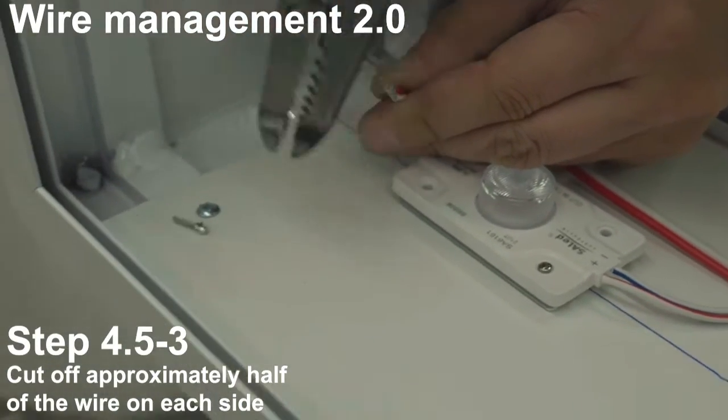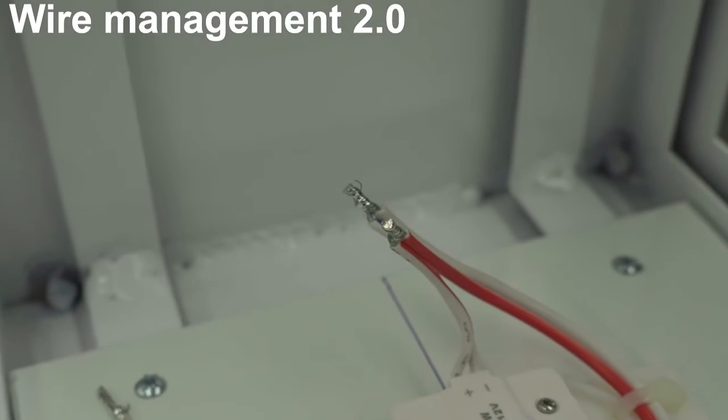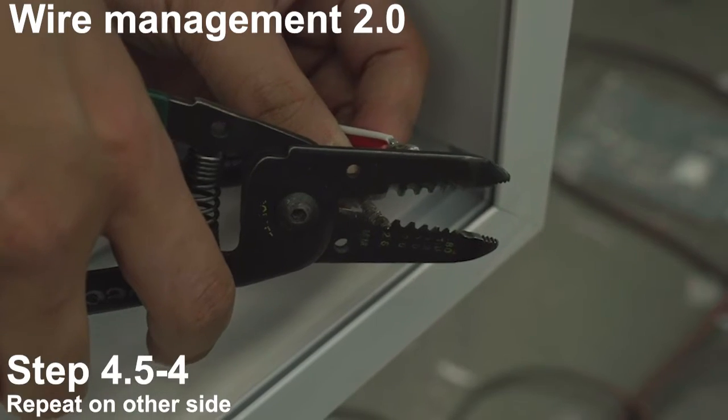Cut off approximately half of the wire on each cell. Repeat on the other side.